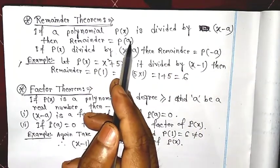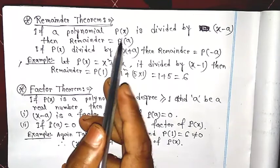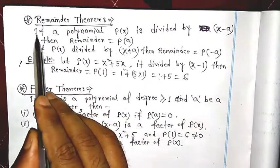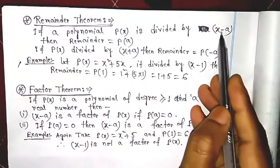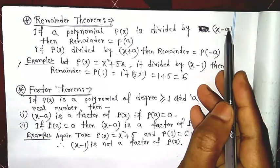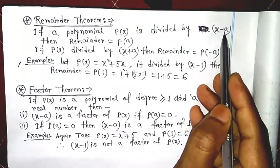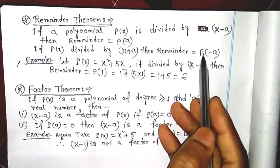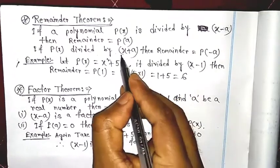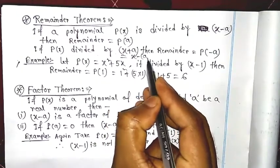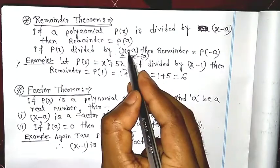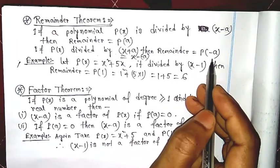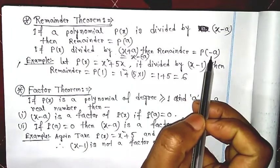Statement of the Remainder Theorem: if a polynomial p(x) is divided by (x − a), then the remainder equals p(a) — the value of the polynomial at x = a. If p(x) is divided by (x + a), then the remainder is p(−a), because x + a = x − (−a). So without division, we can find the remainder.